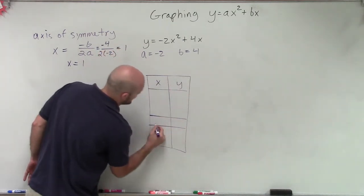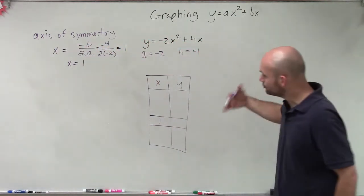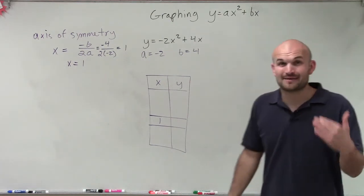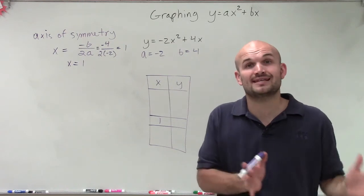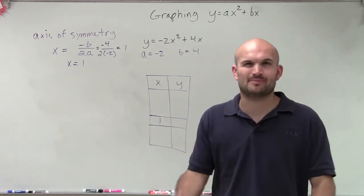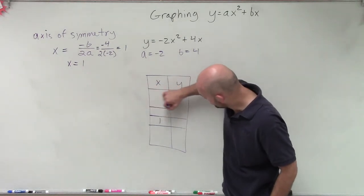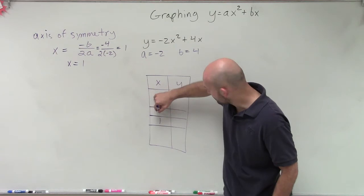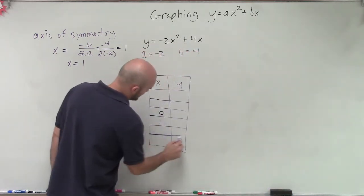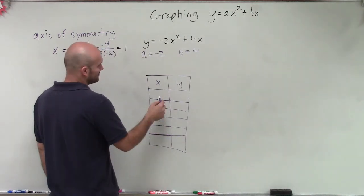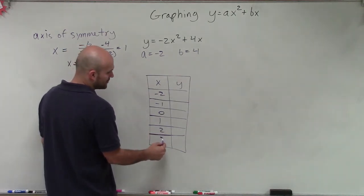Usually that number was always 0, but now our axis of symmetry is 1. We need to choose two points to the left and to the right. Don't choose crazy values — just pick two points to the left and two to the right. To the left, let's pick 0, negative 1, and negative 2. To the right, let's do positive 2 and 3.